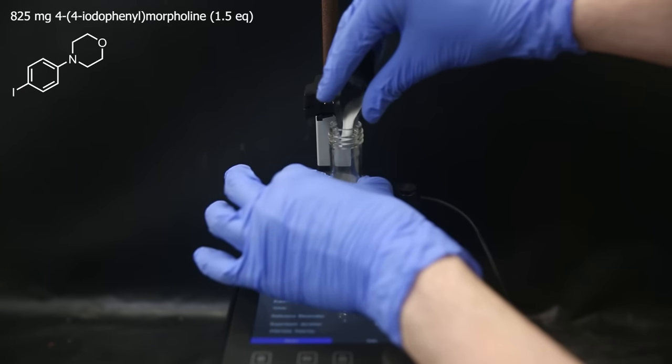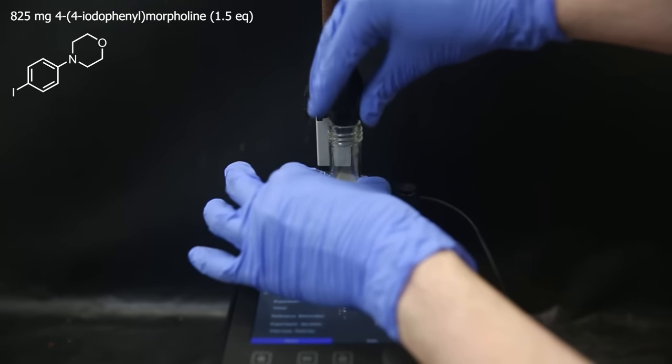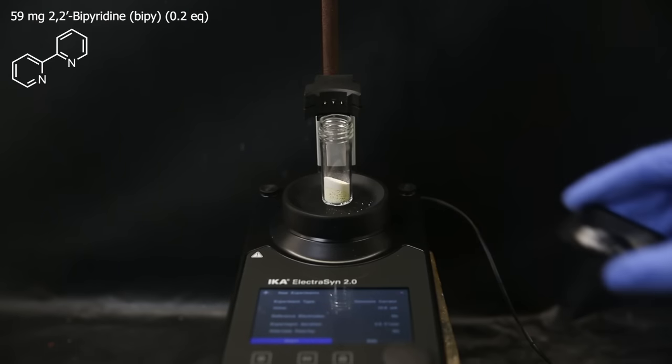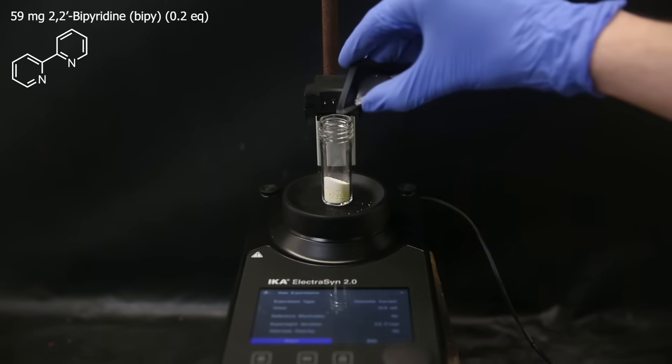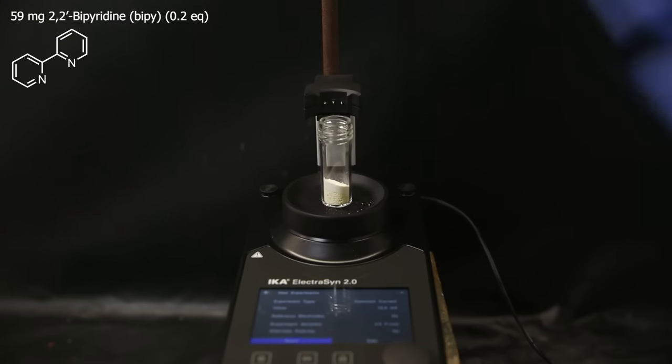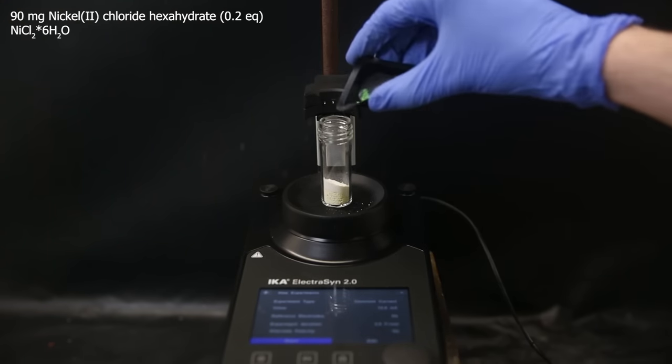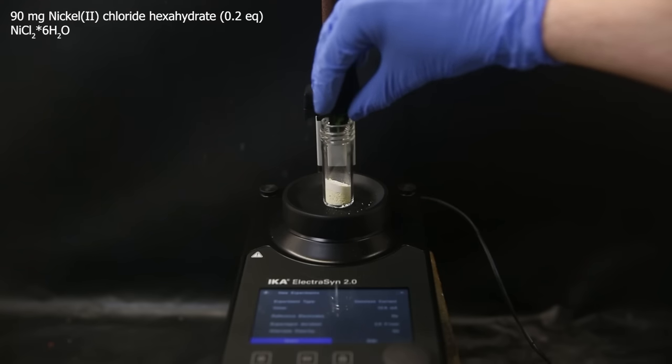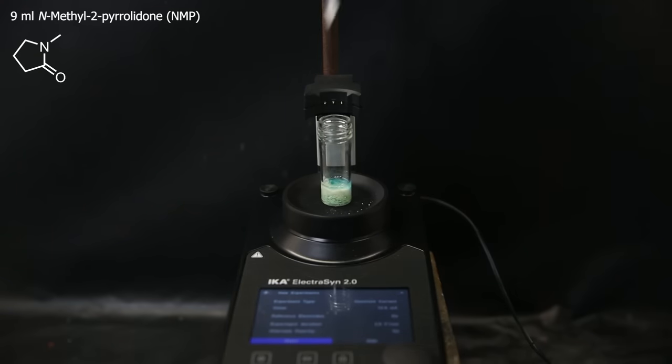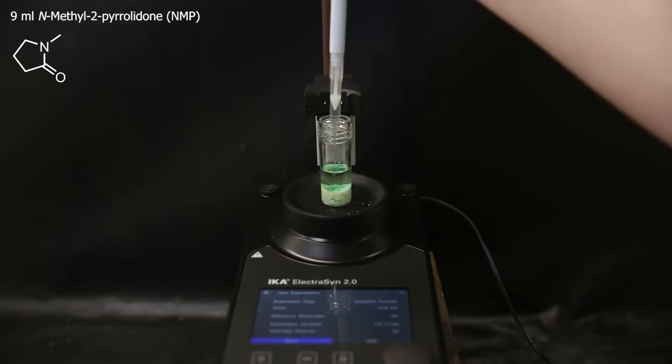Then as the second reactant, I add 825 mg of 4-(4-iodophenyl)morpholine, which can just be bought from a chemical supplier. Then the two reagents that allow the electrons to transfer to the substrate. So first, 59 mg of the ligand 2,2'-bipyridine, and then 90 mg of the salt nickel(II) chloride hexahydrate. As a solvent, I add in 9 ml of N-methylpyrrolidone, or NMP for short.